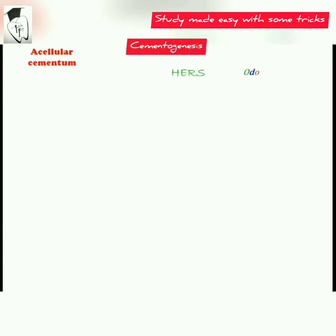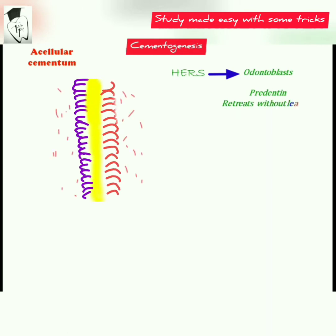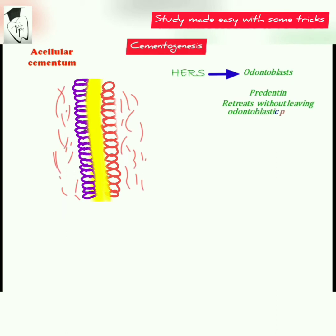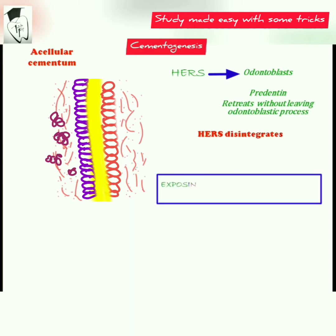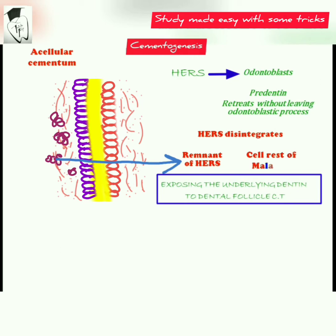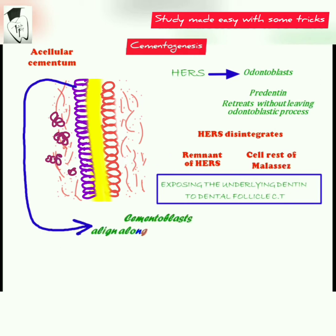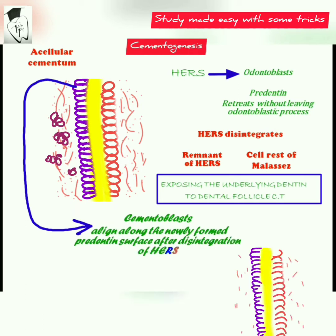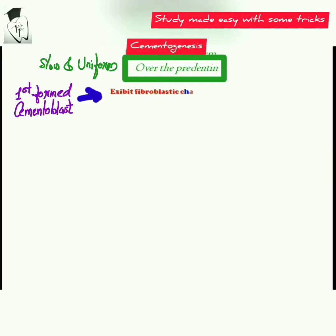Now we'll discuss in detail about how the acellular cementum is formed. As soon as the odontoblasts form the predentine and retreat without leaving the odontoblastic process, the Hertwig's epithelial root sheath disintegrates, exposing the underlying dentine to the dental follicle connective tissue cells. The remnants of the Hertwig's epithelial root sheath are called cell rests of Malassez. The newly formed cementoblasts align along the newly formed dentine surface and lay the cementoid, which is the cementum matrix, and then retreat.